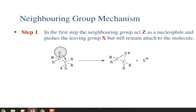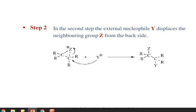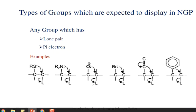By interacting with the electrons, the leaving group X is pushed out from the parent molecule, forming an intermediate where Z is still attached. In the second step, the external nucleophile displaces the neighboring group Z from the back side and forms the final product. This is how neighboring group participation takes place.